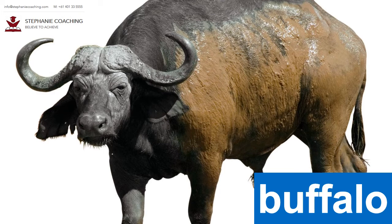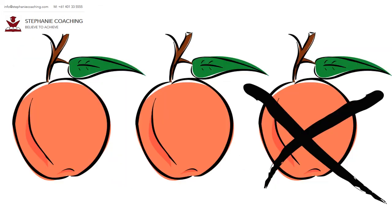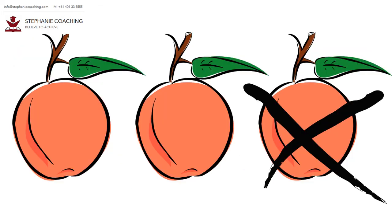Word number 23 is subtract. In math, subtract means take away. If you subtract or take one apple from three apples, there will be two apples left.